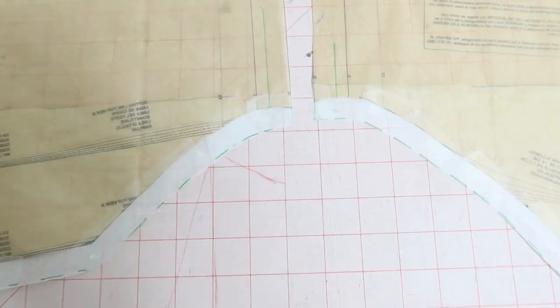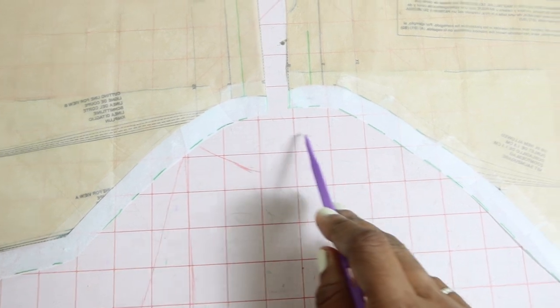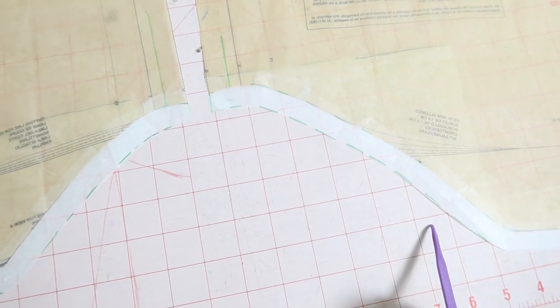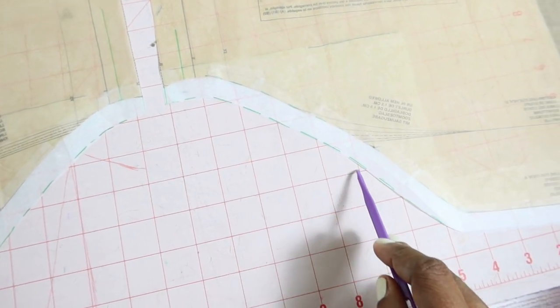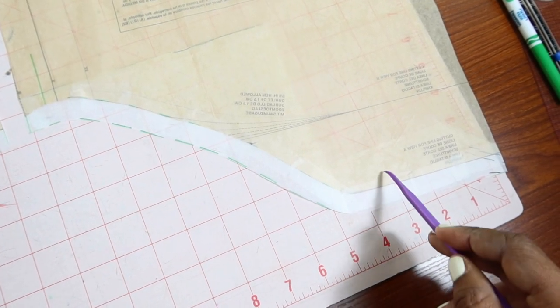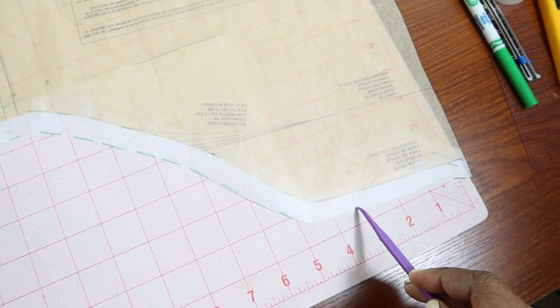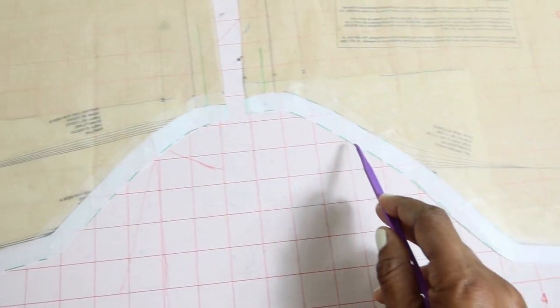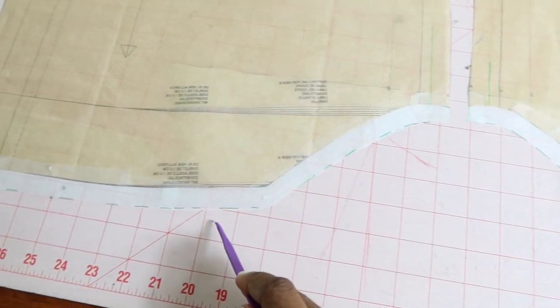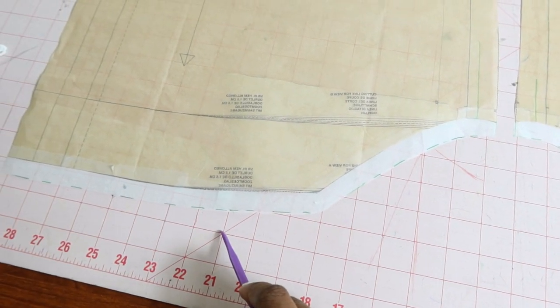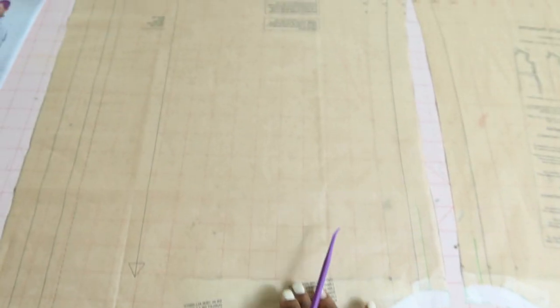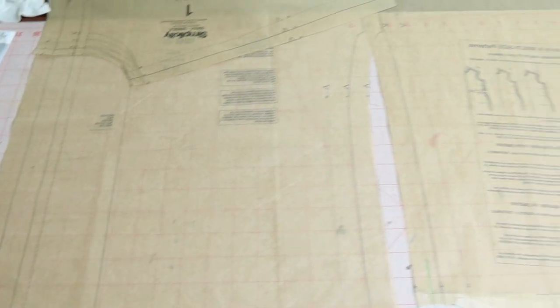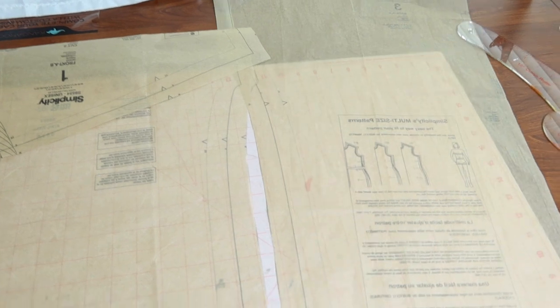I added the seam allowance, so this is how the pattern is looking now. I just kept going and ended up extending the hem in this area also on both sides. The other thing I want to do is make this a dress, so I'm going to lengthen it, and then after that I should be able to cut out my fabric.